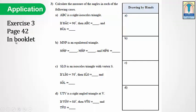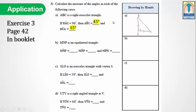Application. Please open your booklet page 42 and follow with me. Exercise 3: Calculate the measure of the angles in each of the following cases. A: ABC is a right isosceles triangle. If BAC equals 90 degrees, then find the measure of angle ABC and BCA. BAC equals 90 degrees, so it is a right triangle at A. We will draw this triangle. The base angles in a right isosceles triangle are each equal to 45 degrees.